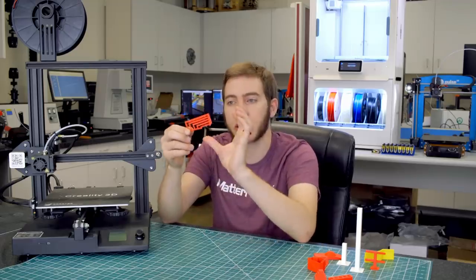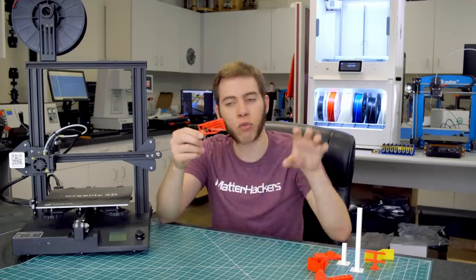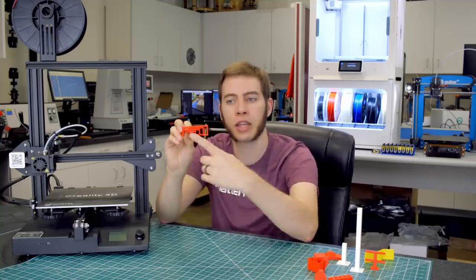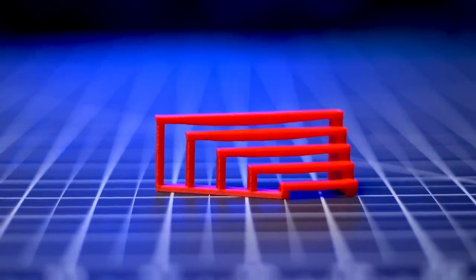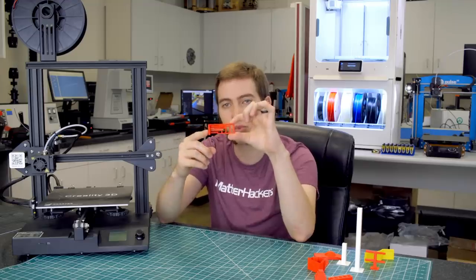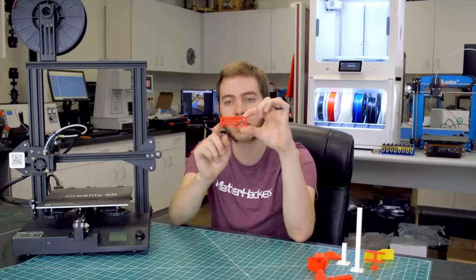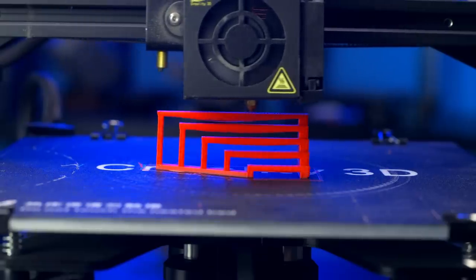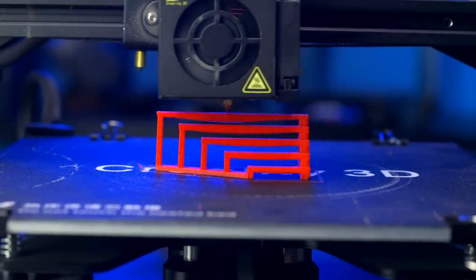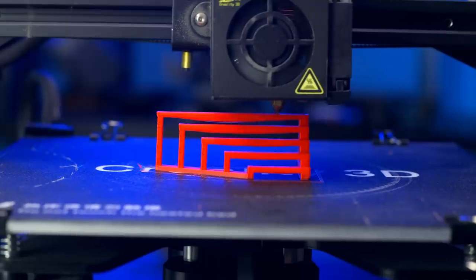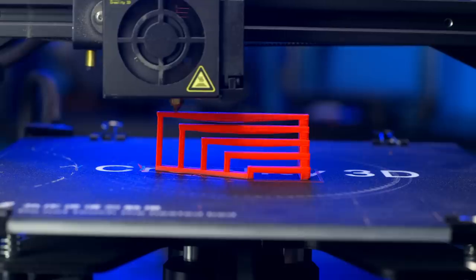This is the bridging test, and it's testing similarly to the overhang test, but what it's specifically looking for is unsupported spans like this, where it has to connect large areas with nothing underneath to support it. This specific print will get a score of three because these first three sections don't have any significant drooping, you can't see any bits of filament that are hanging out, but levels four and five do have little strands that are hanging down below, and so those wouldn't get scored well.